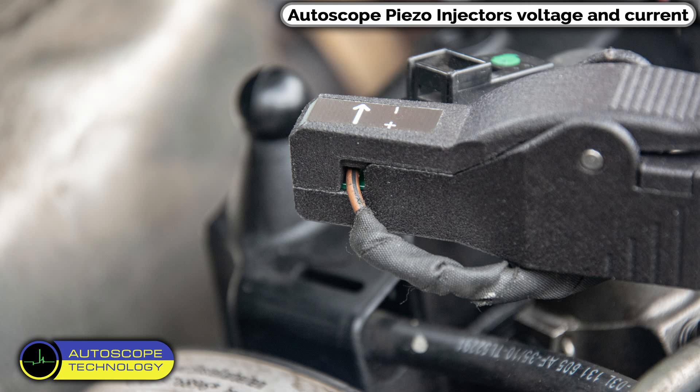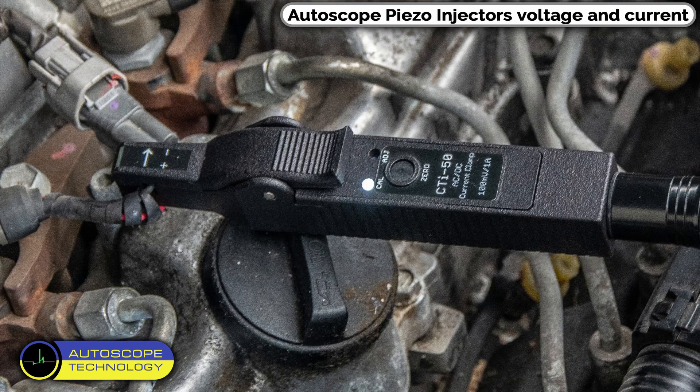To measure the current in the injector control circuit, we use the CTI-50 current clamps. They have a miniature grip, which allows you to connect to the car's electrical wiring.